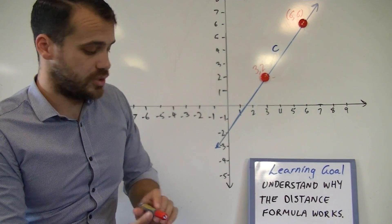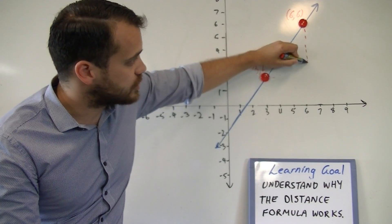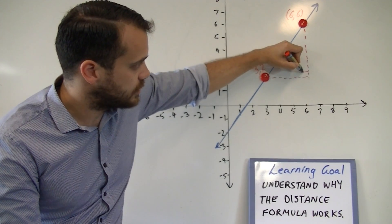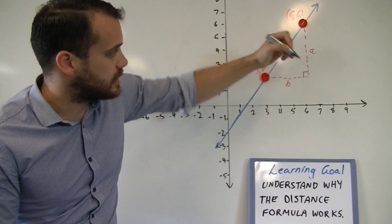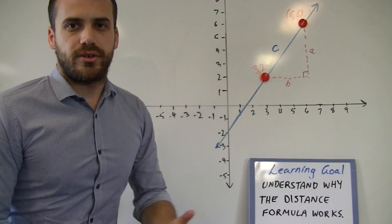Now, if I construct a right-angled triangle by drawing straight down there and across here, and if I was to call this length A and this length B, that should start looking familiar to you. Pythagoras' theorem,